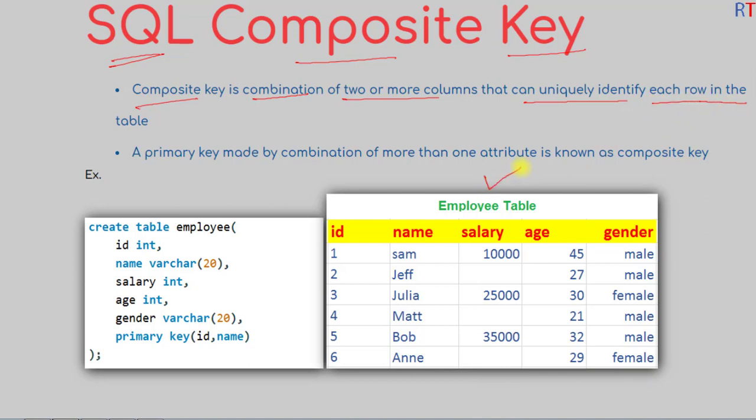We have the employee table. Now sometimes just taking one column cannot uniquely identify each row of that table, so we need to take two or more columns in combination to guarantee the uniqueness. So whenever we take multiple columns in combination...